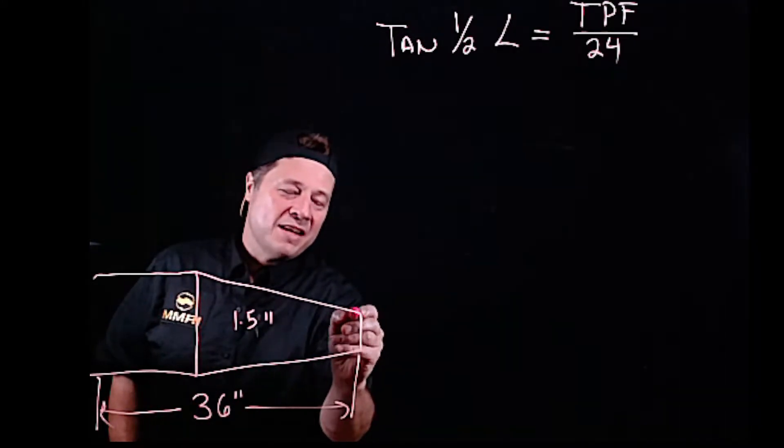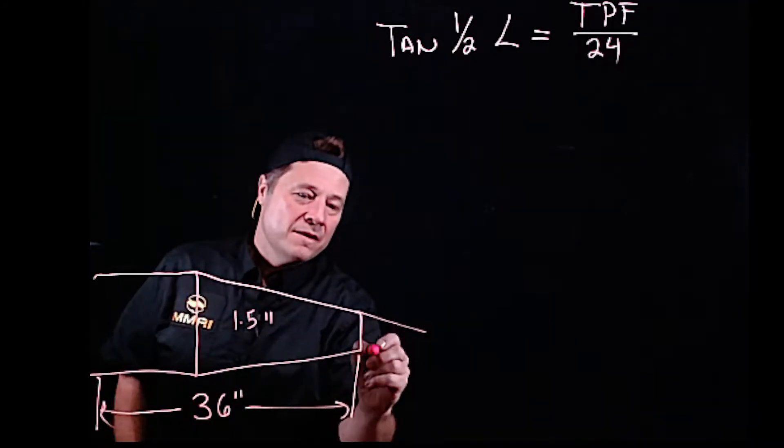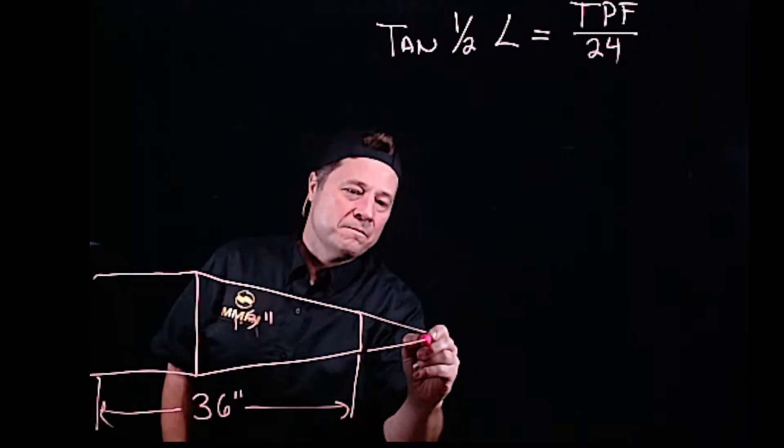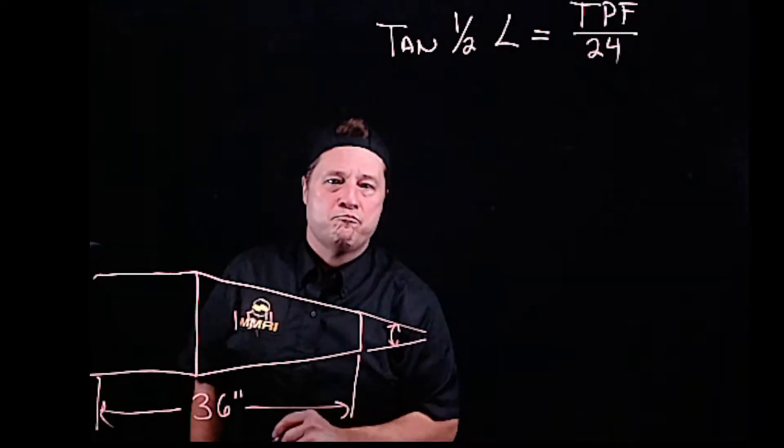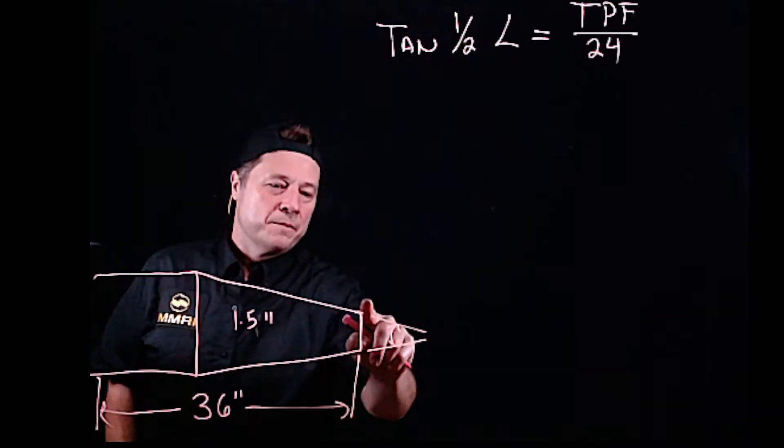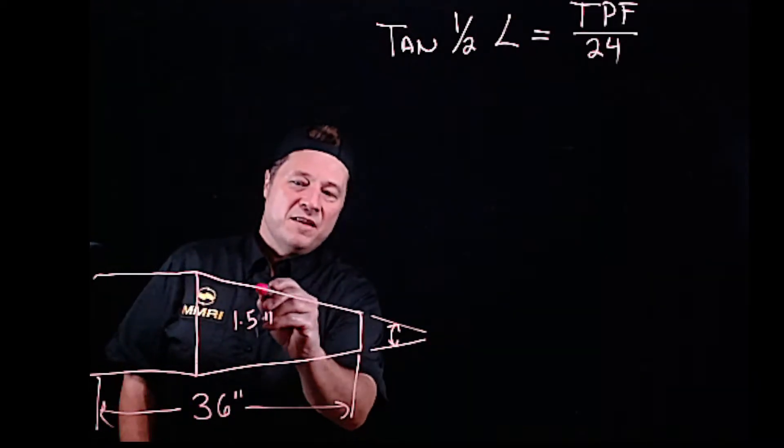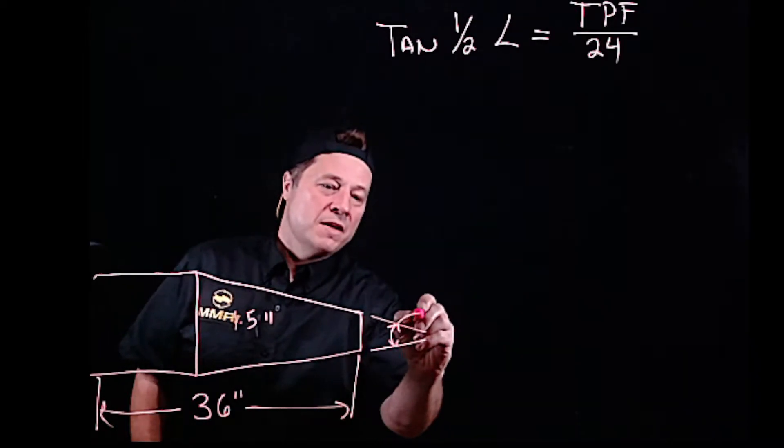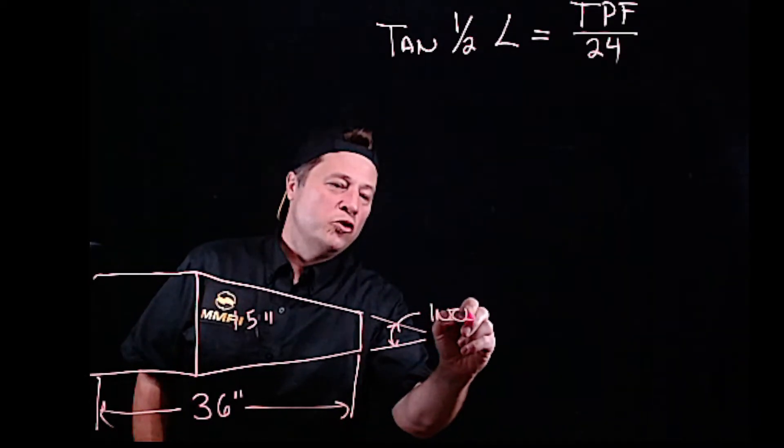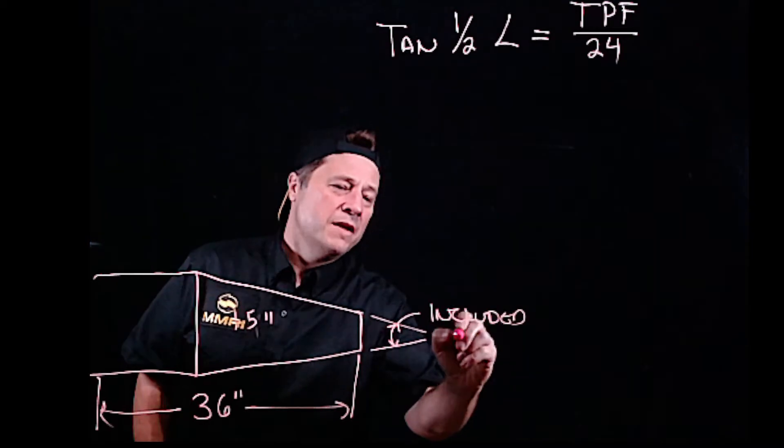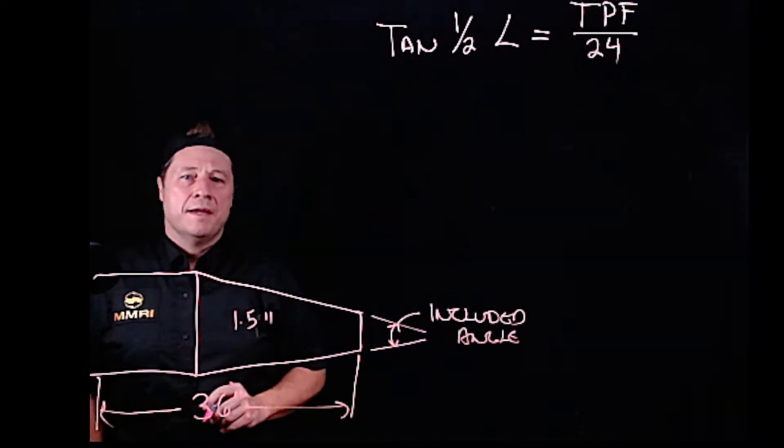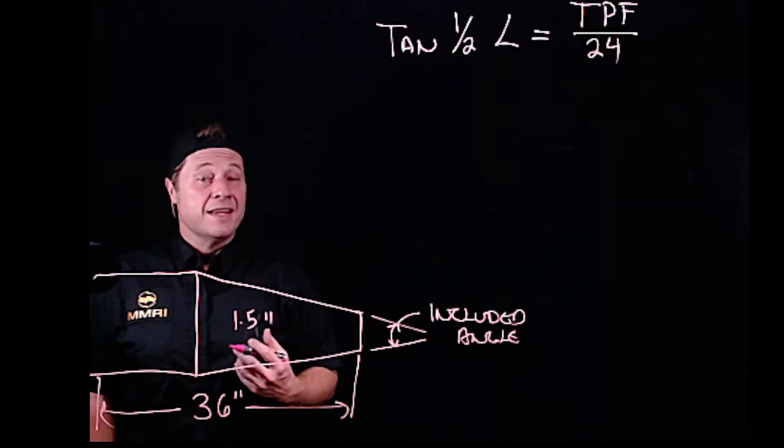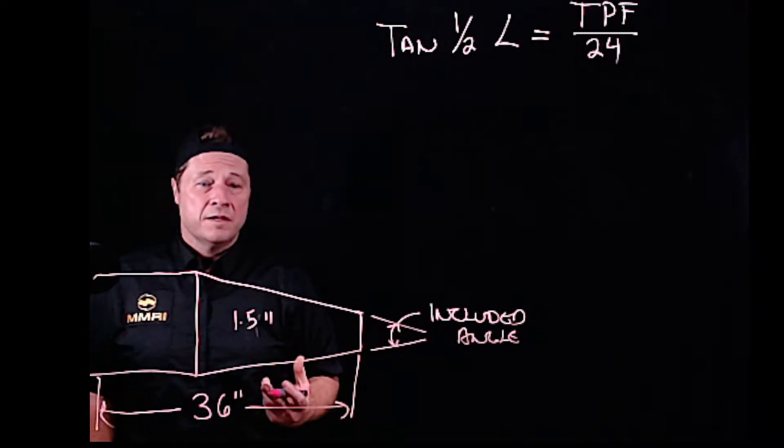If I were to take this angle right here, this is what's called the included angle. This is the whole angle. I could draw this even simpler. If I just take this taper I'm creating and bring it to a point, if I just brought that to a point, this is an angle. It's a triangle, and this is an included angle.